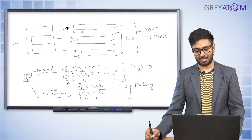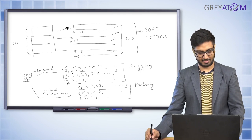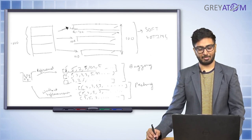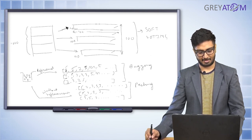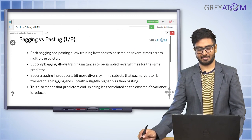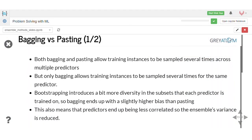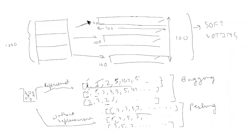In bagging, a data point like row number one can be repeated multiple times within the same subset of data. So the first two key points are: both bagging and pasting allow instances to be sampled several times across multiple predictors, but only bagging allows training instances to be sampled several times for the same predictor. Across models M1, M2, M3, both methods allow repeated sampling, but within a single predictor only bagging permits repetition.